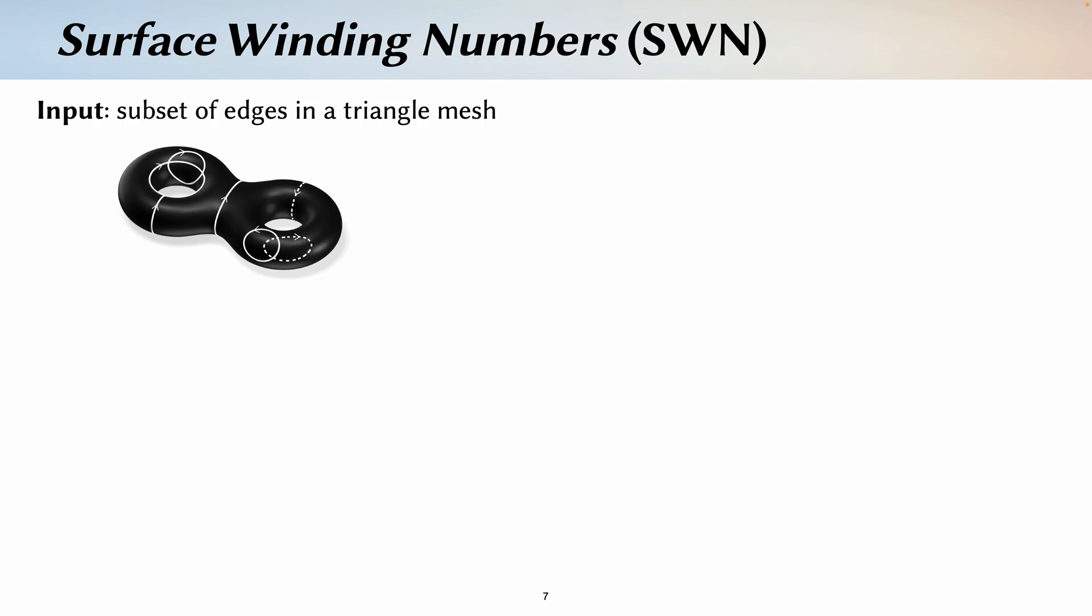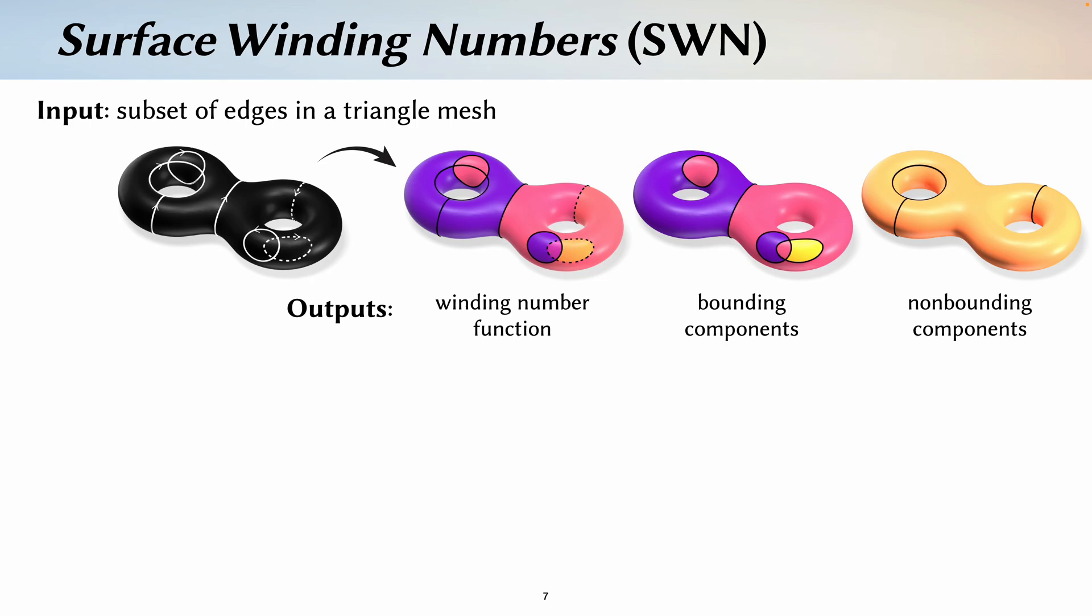To address all these issues, we introduce surface winding numbers, where as input, we take a collection of oriented curves, which are going to be some collection of oriented edges in a triangle mesh. And as output, we give you the winding number function defined on the surface,